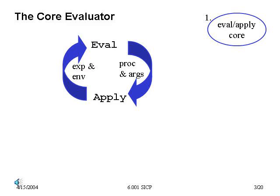Let's start with the heart of the interpreter. The essence of the evaluator is a tight loop in which the evaluation of an expression with respect to an environment reduces, in the general case, to the application of a procedure object to a set of arguments. This in turn generally reduces to the evaluation of a simpler expression — namely the body of the procedure — with respect to a new environment in which the formal parameters have been bound to a new set of arguments. This loop continues unwinding expressions until it reaches the application of a primitive procedure or the evaluation of a primitive data object.